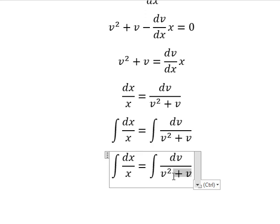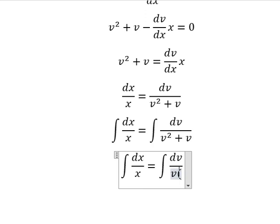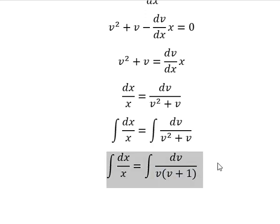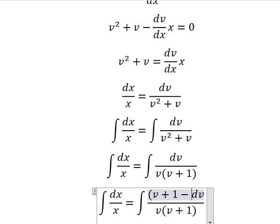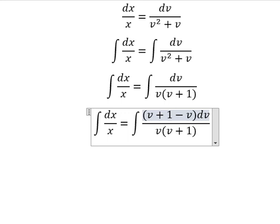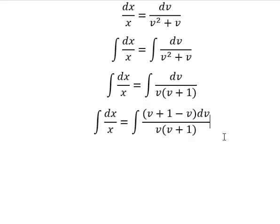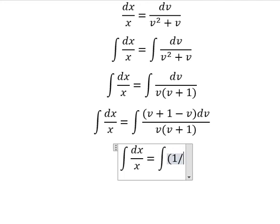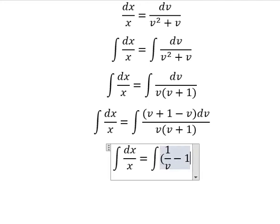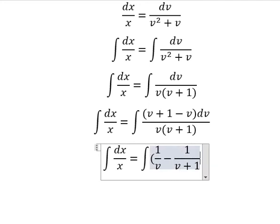This one we can do about factorization. We know that coefficient of dv is about number one, so I need to add about v in here. Later we need to minus about v. So v plus 1 divided by v, we have 1 over v minus 1 over v plus 1, dv.